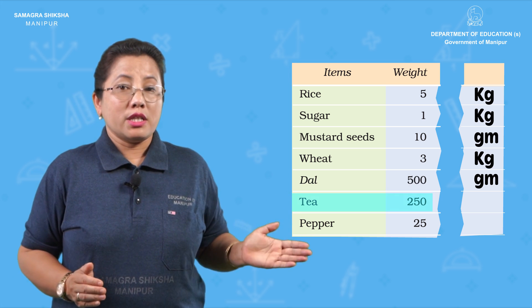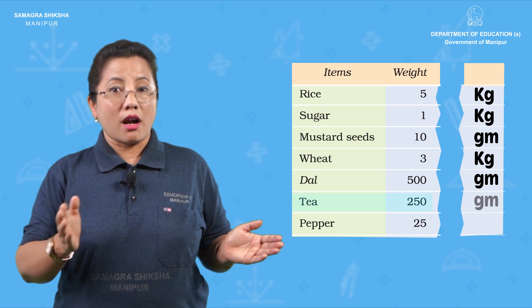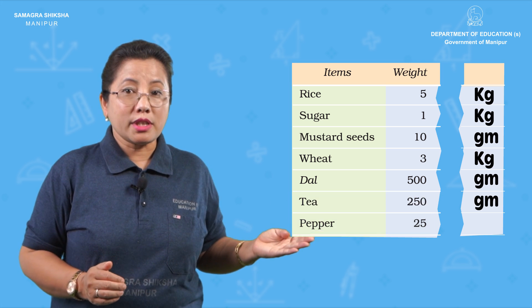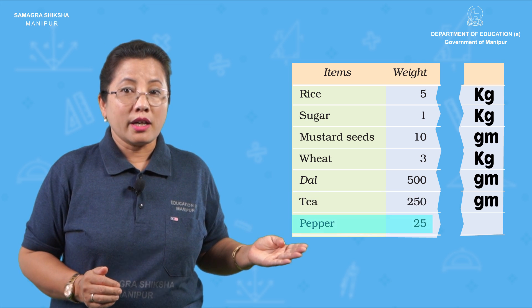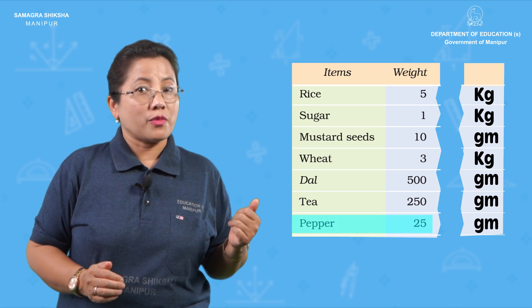Tea — chamana, 250 grams. Yes, grams. Peppers — yes, 25 grams.